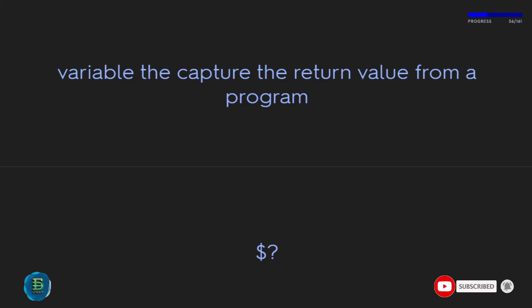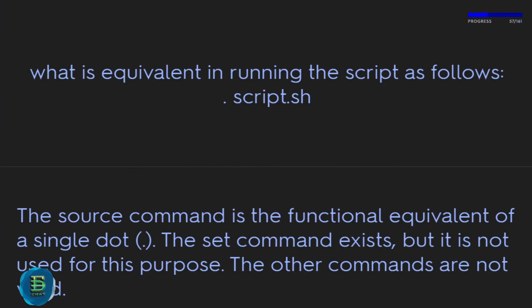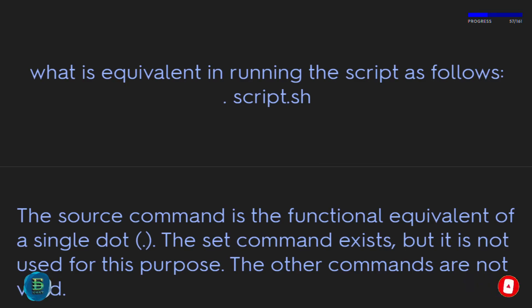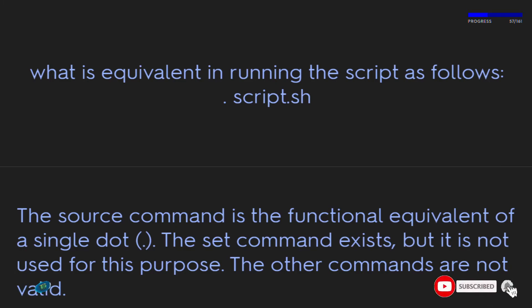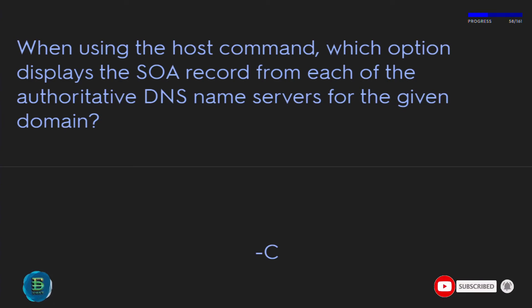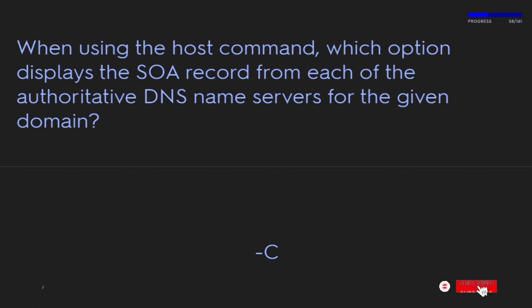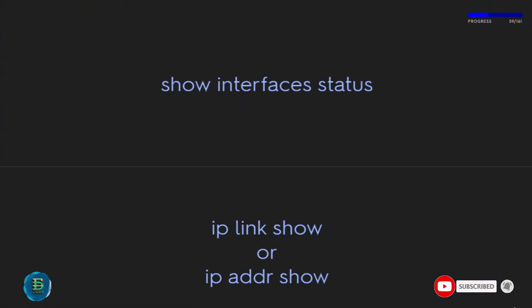The variable that captures the return value from a program is $?. The source command is the functional equivalent of a single dot (.). The set command exists but is not used for this purpose. When using the host command, the -C option displays the SOA record from each of the authoritative DNS name servers for the given domain. To show interface status, use ip link show or ip addr show.